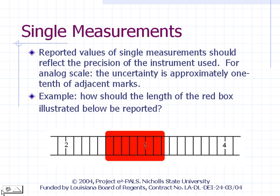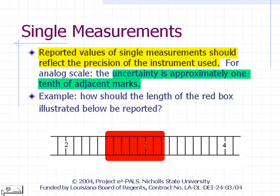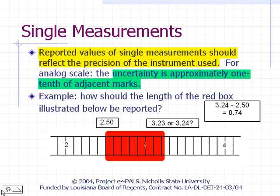Individual measurements should reflect the precision of the instrument used — the fineness of its scale or its sensitivity. In general, the uncertainty is approximately one-tenth of the difference in readings for adjacent marks. For example, if adjacent marks on a scale are 0.1 centimeters apart, the uncertainty is approximately 0.01 cm, and measurements should be reported to the second decimal place. The right edge appears to be around 3.23 or 3.24, and the left edge around 2.50, giving a difference of 0.73 or 0.74 — we have to estimate whether the last digit is a 3 or 4.